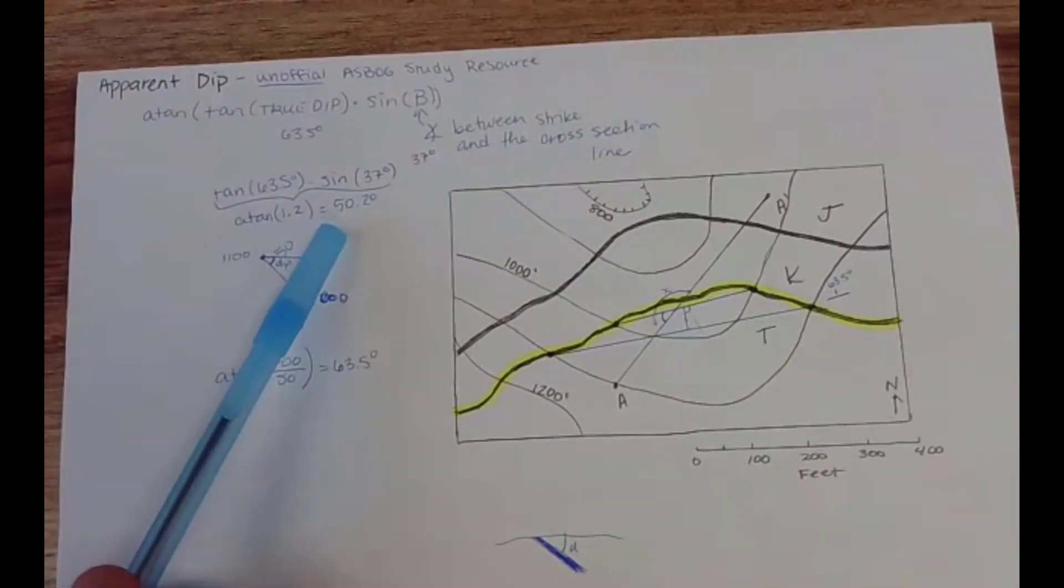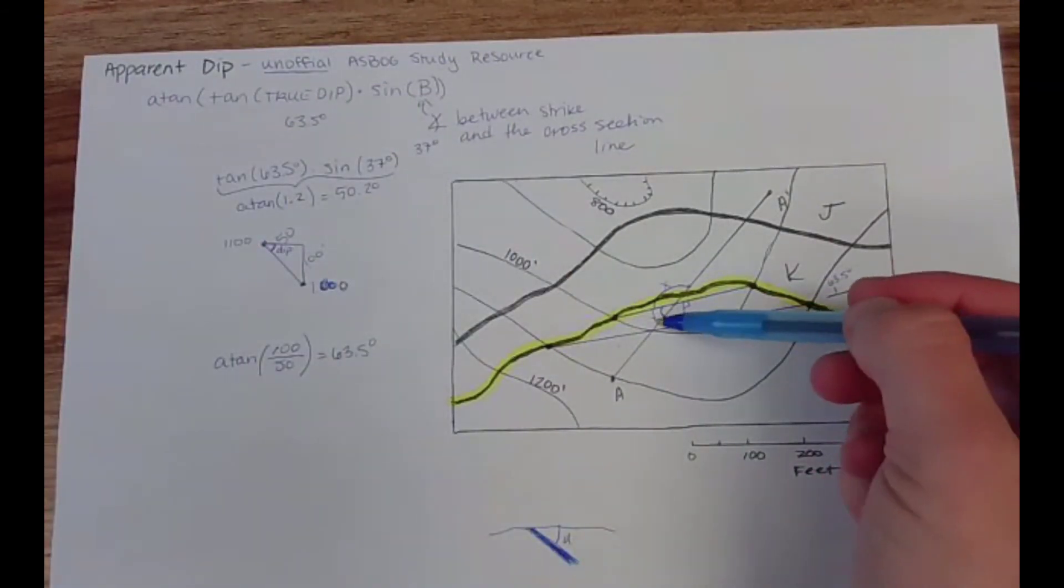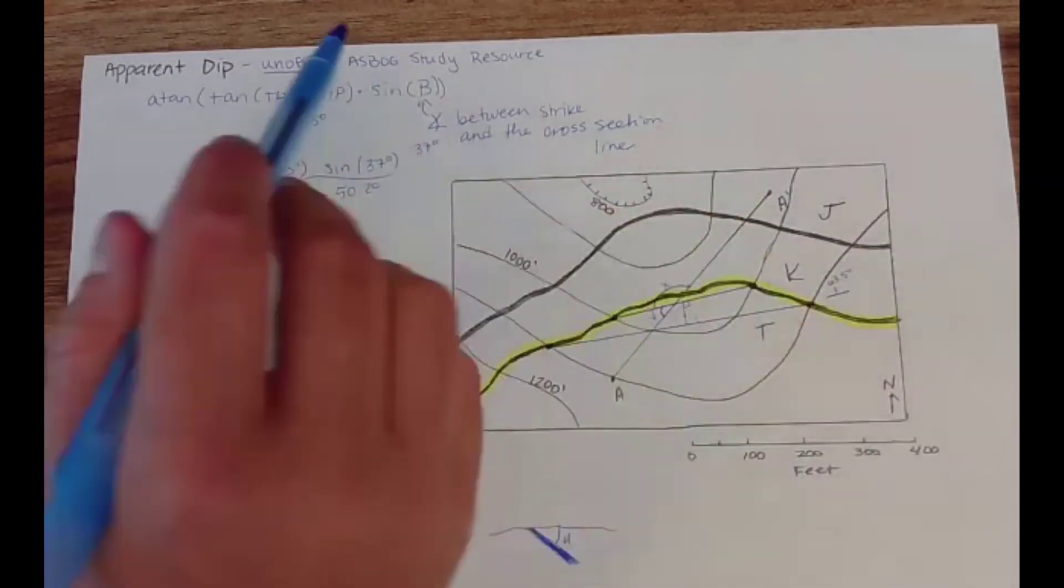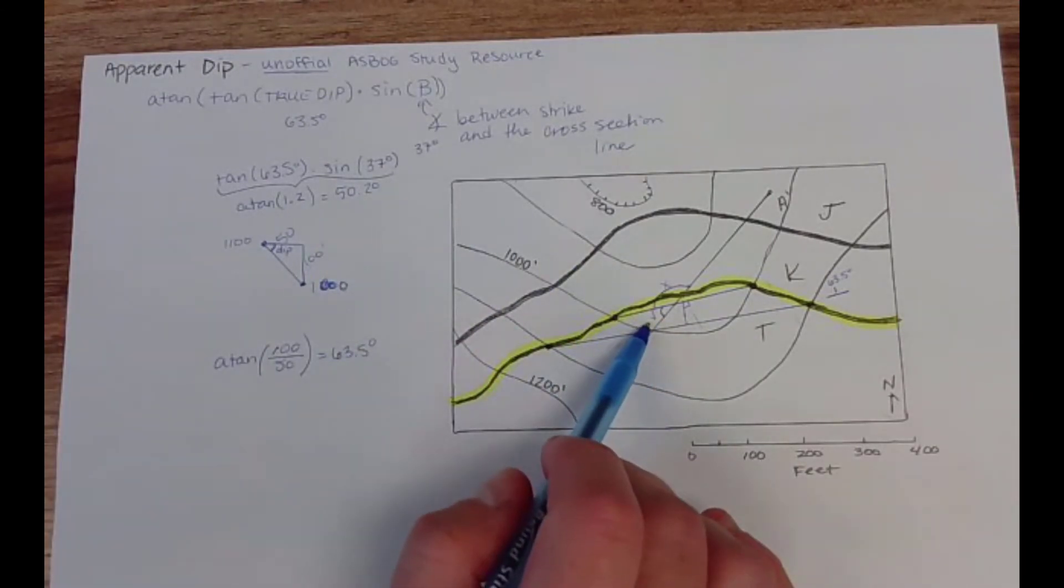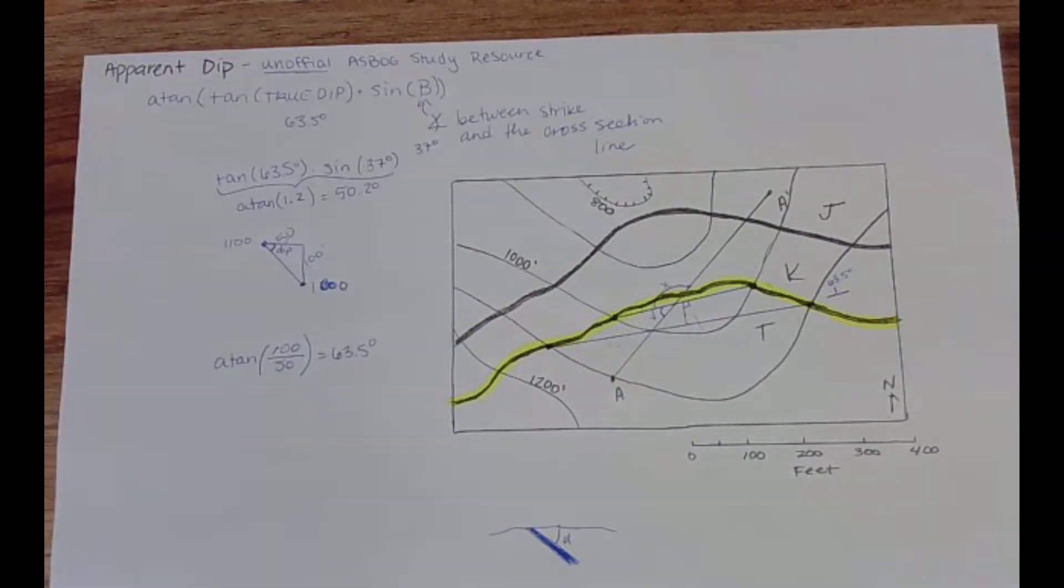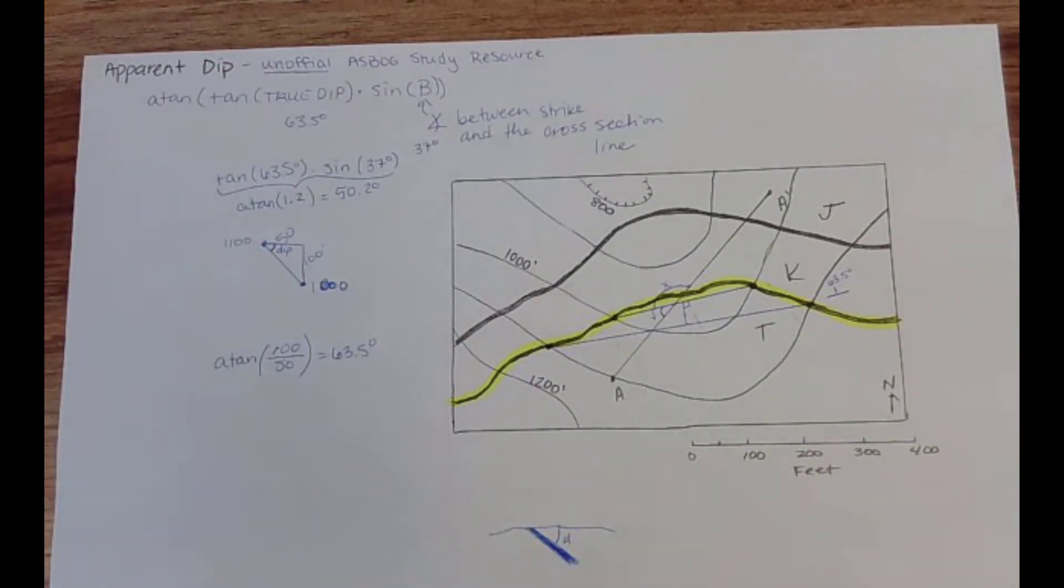So my apparent dip is 50.2 degrees. Always double check that it's less than or equal to your true dip. The bigger beta is or the closer to 90 beta is, the closer to true dip your value should get. So here our beta is pretty small, 37. If I had gotten 62 I'd be real worried, I'd go back and check my answers. The same thing if I'd gotten 8 degrees I would have not believed that because that would imply that my beta was really really small if my true dip is 63.5.